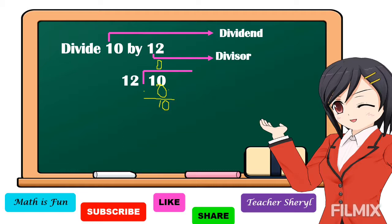Then we add a decimal point and zero to our dividend, and we also affix the decimal point in our quotient. Bring down zero: 100 divided by 12 is equal to 8. Eight times 12 is equal to 96. 100 minus 96 is equal to 4.